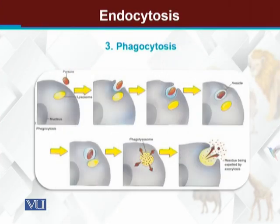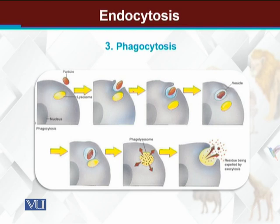یہاں آپ دیکھ سکتے ہیں کہ ایک solid particle ہے — مثال کے طور پر یہ کوئی bacteria ہے اور یہ white blood cells ہیں۔ White blood cells عام طور پر bacteria کو engulf کرتے ہیں۔ جیسے bacterium cell کے قریب آئے گا، cell اپنی membrane کو inward invaginate کرے گا۔ جیسے invagination ہوگی، food particle اندر آ جائے گا، ایک vesicle فارم ہوگا اور یہ vesicle cytoplasm کے اندر move کروایا جائے گا۔